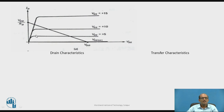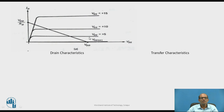These are the drain characteristics. By keeping Vgs constant, the drain-to-source voltage is changed from 0 to maximum, and the readings are taken for drain current. If Vgs is less than threshold voltage, the drain current is 0. The curves shown are for Vgs equal to 5 volts, 10 volts, and 15 volts. And this is the DC load line, with extreme points at Vdd and Vdd divided by Rd.